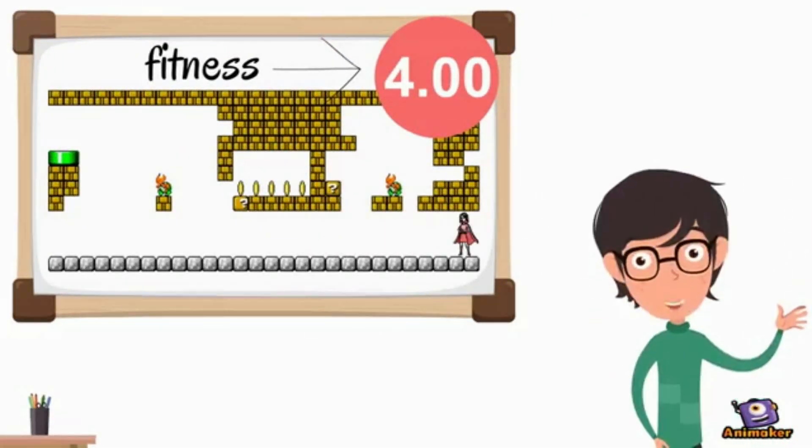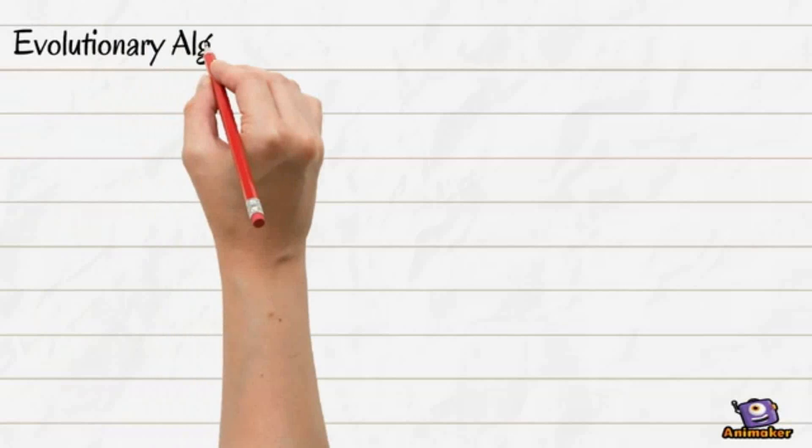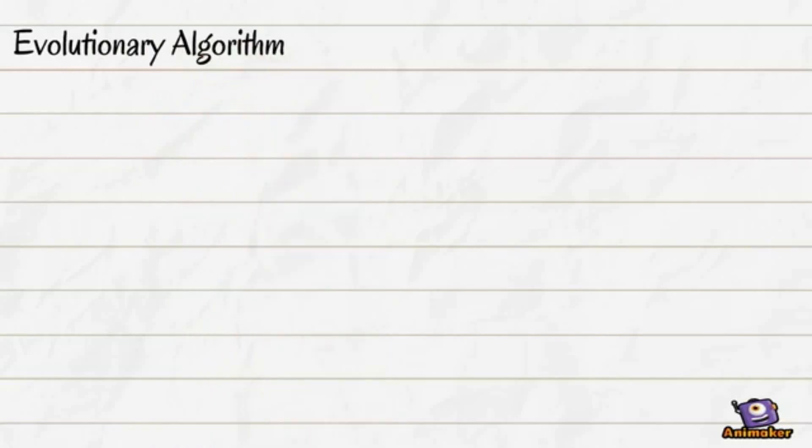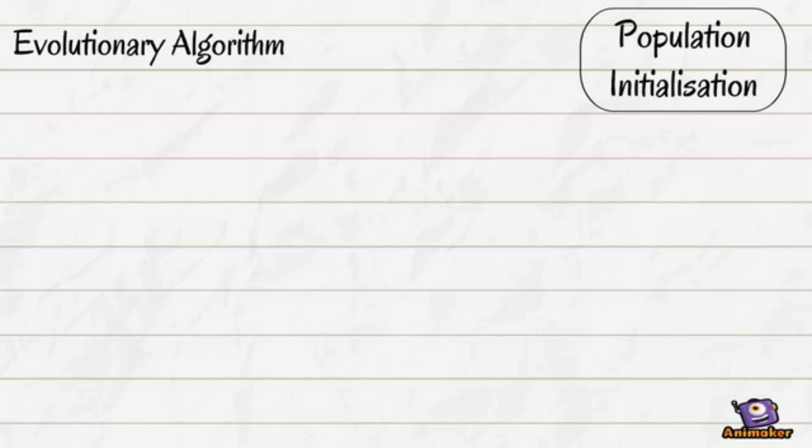Wait, I'll just show you! The evolutionary algorithm starts by randomly generating some levels, the initial population.